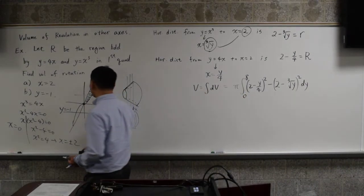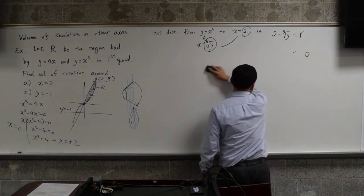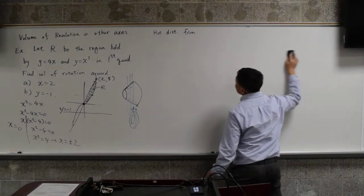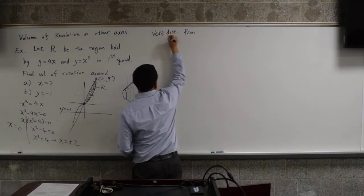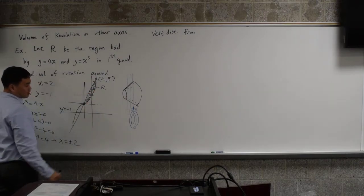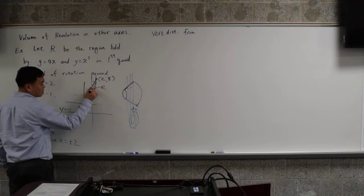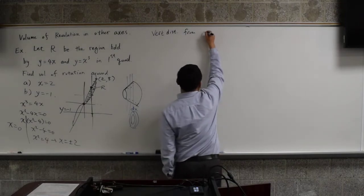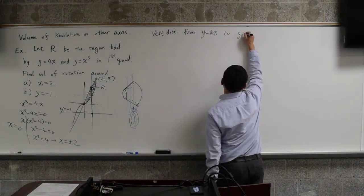Okay, now we're going to work with vertical distances. Vertical distance from... Well, since we're taking the cross-section this way, if I had this distance, I would be the distance from y equals 4x to y equals negative 1.